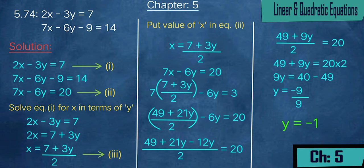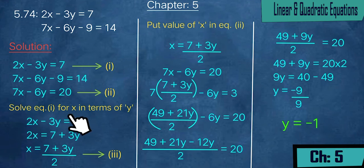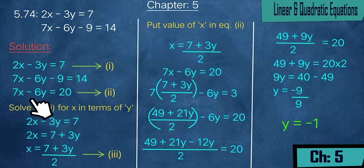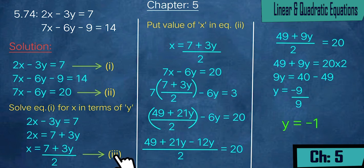Next, exercise 5.74: 2x - 3y = 7 and 7x - 6y = 14. We solve equation 1 for x in terms of y: 2x = 7 + 3y, so x = (7 + 3y)/2, which we call equation 3. Now we put this value of x into equation 2.